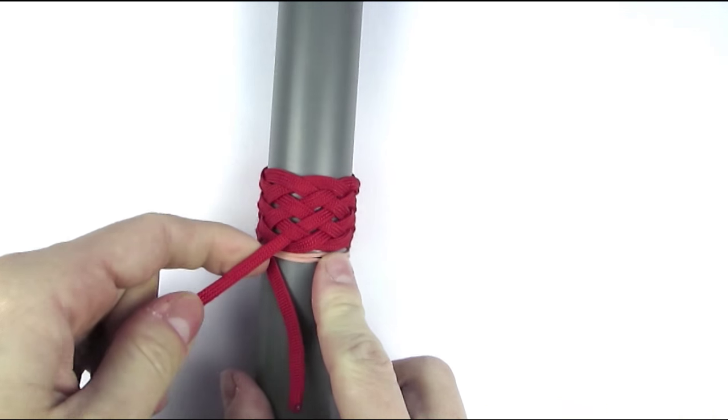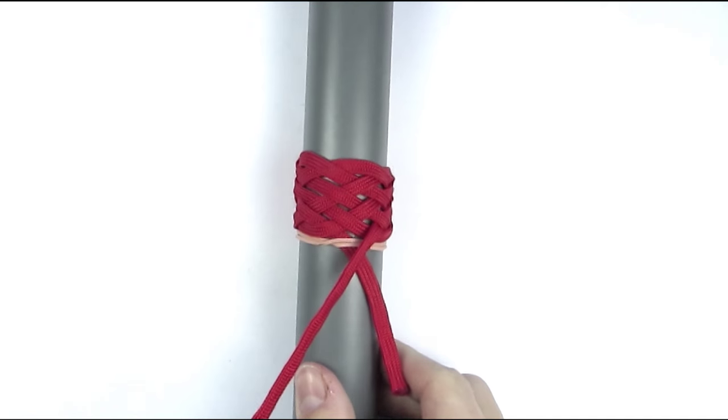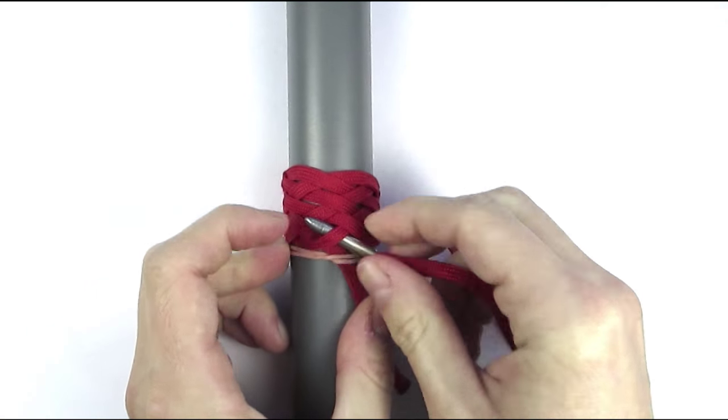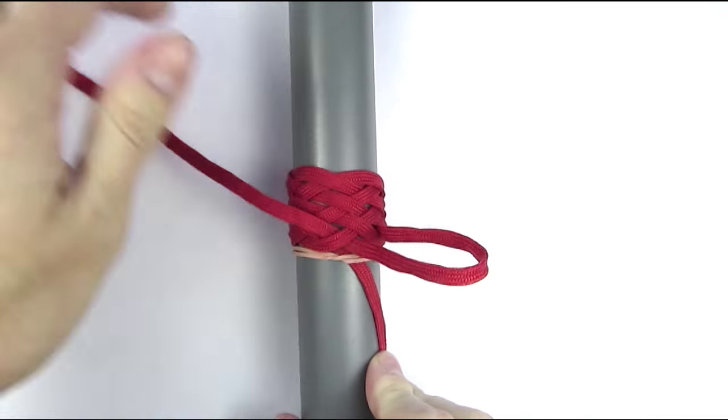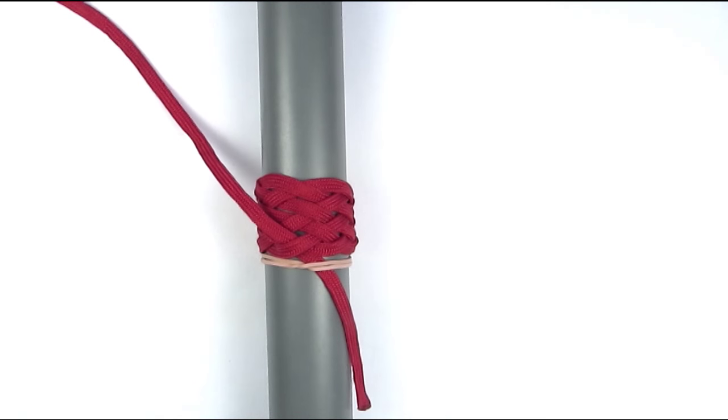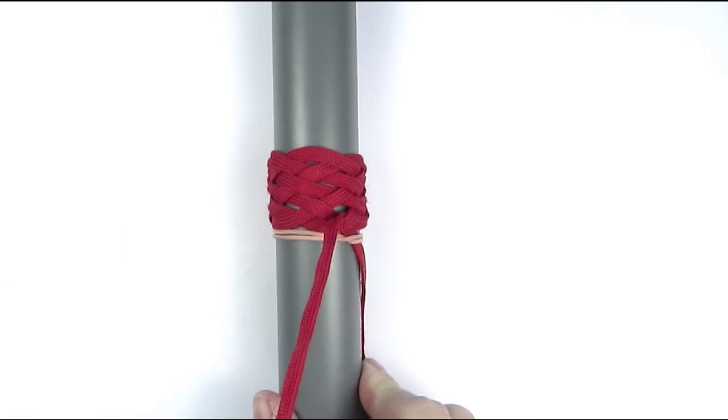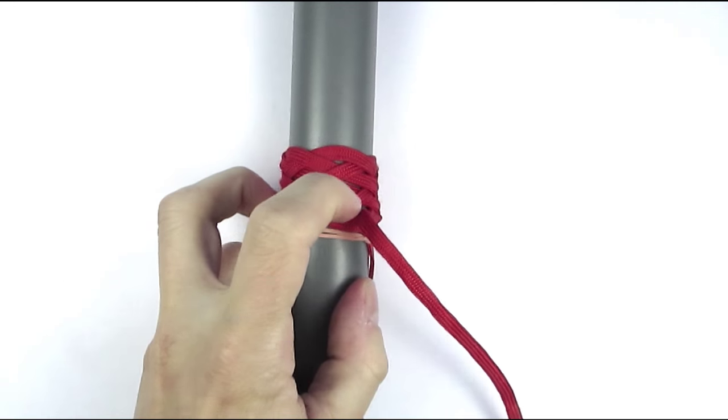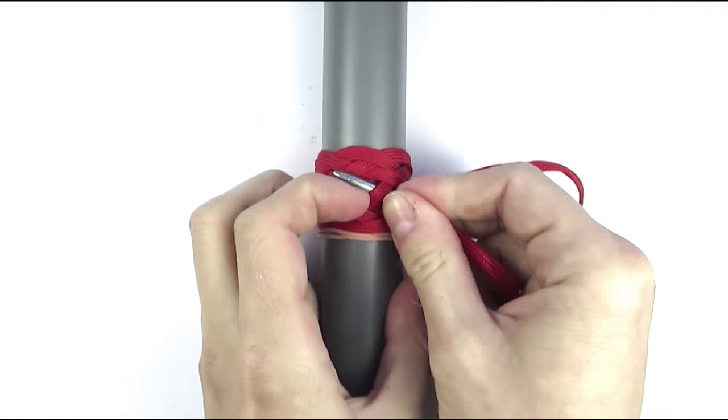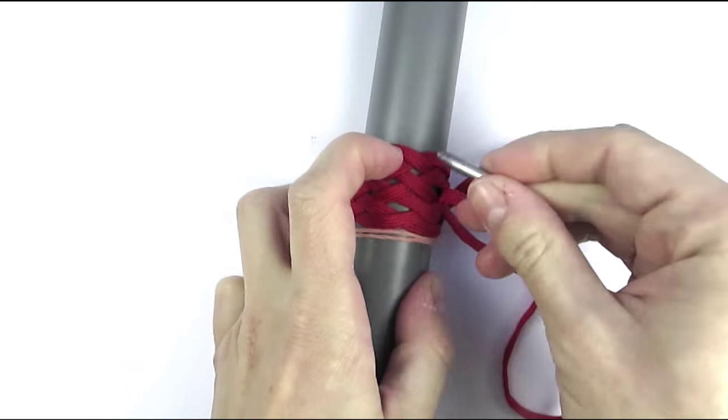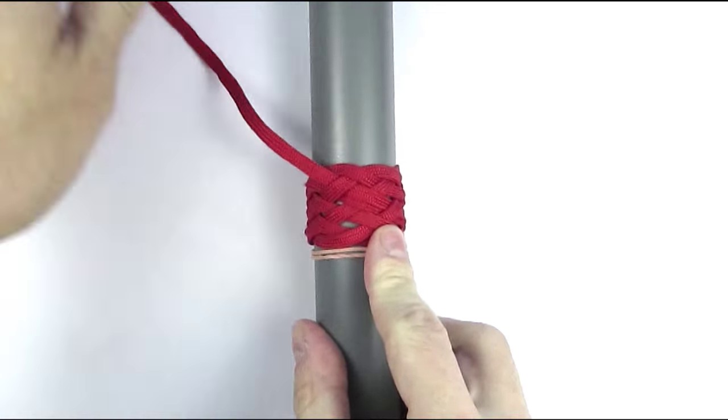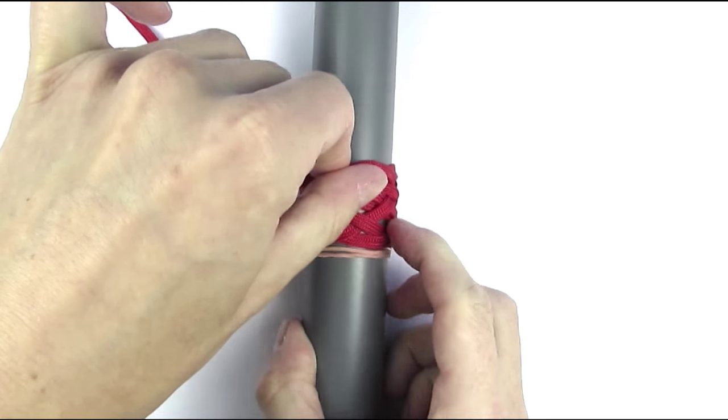We have now tied a 7-part 6-bight Turk's head. We're going to enlarge it again, again following our standing end. So under, over, under, over, under and over. Basically, we just followed it to the top.